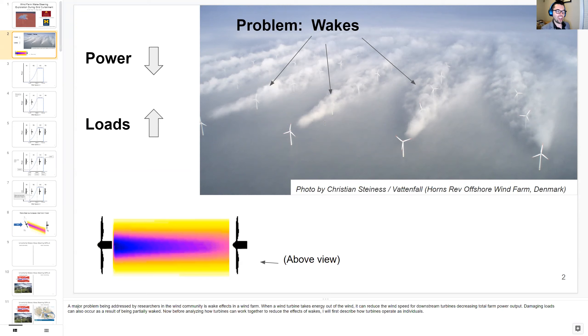When a wind turbine takes energy out of the wind, it can reduce wind speed for downstream turbines, therefore decreasing total power of the wind farm.